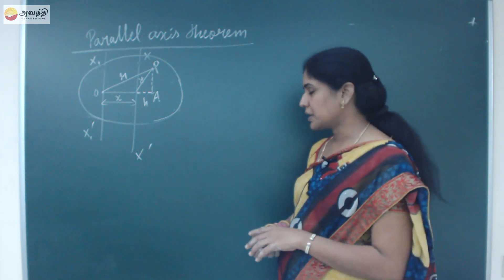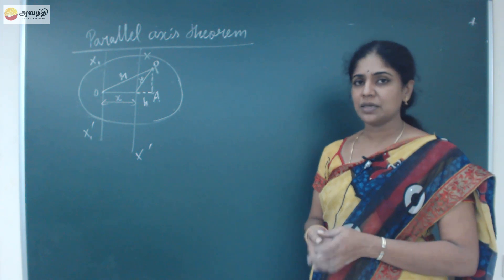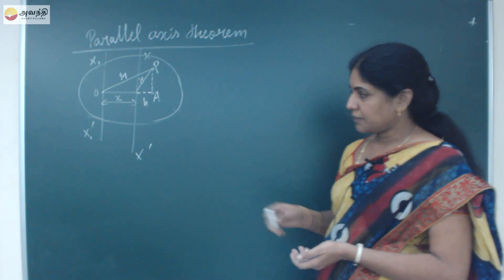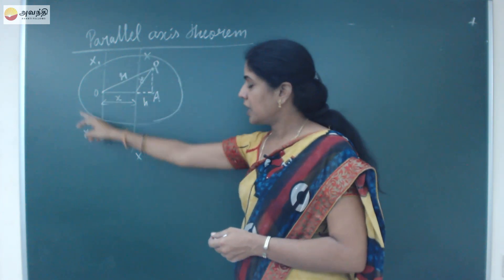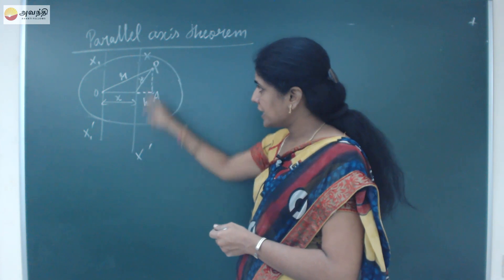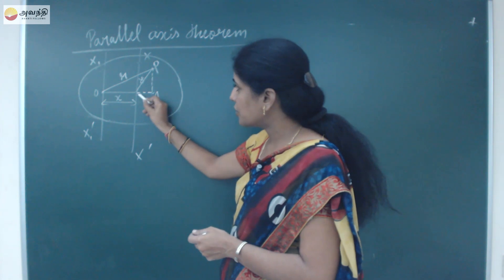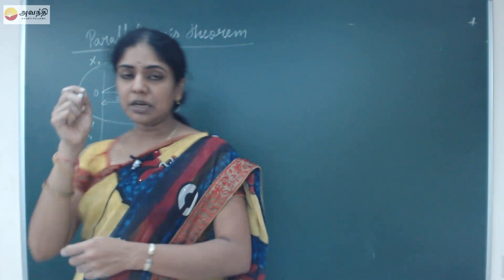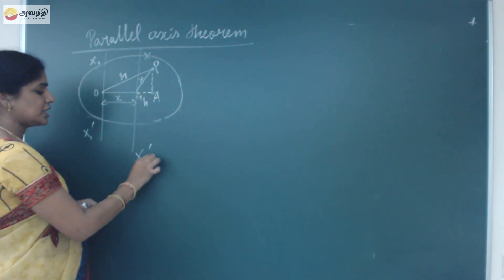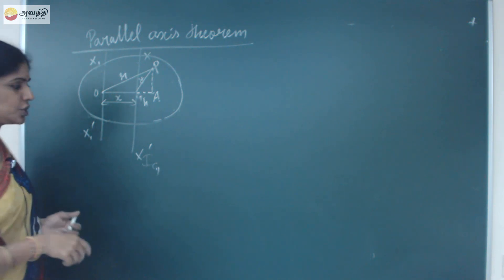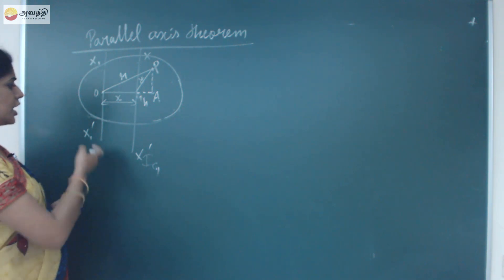In the moment of inertia, we have two theorems: one is the parallel axis theorem and the other is the perpendicular axis theorem. In the parallel axis theorem, I have a lamina, and the axis X₀X' passes through the center of gravity. The moment of inertia about this axis is taken as Ig — that is, the moment of inertia of an axis passing through the center of gravity.